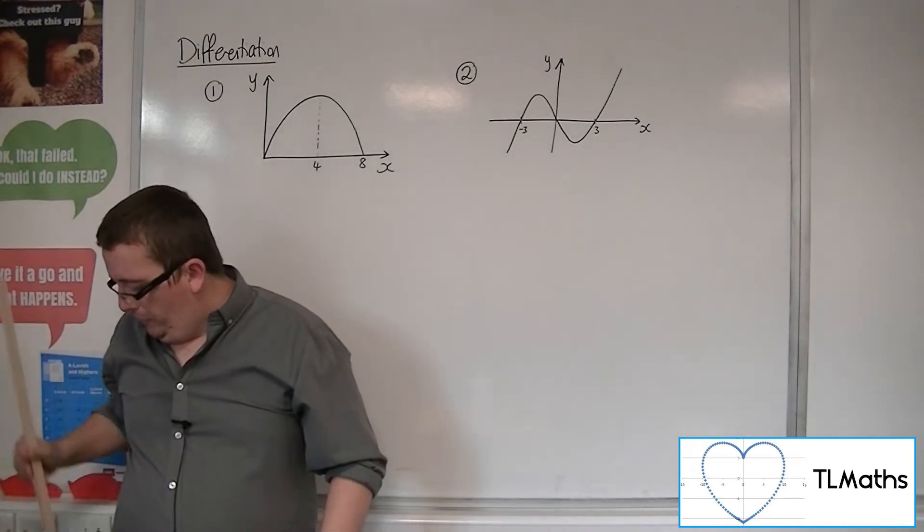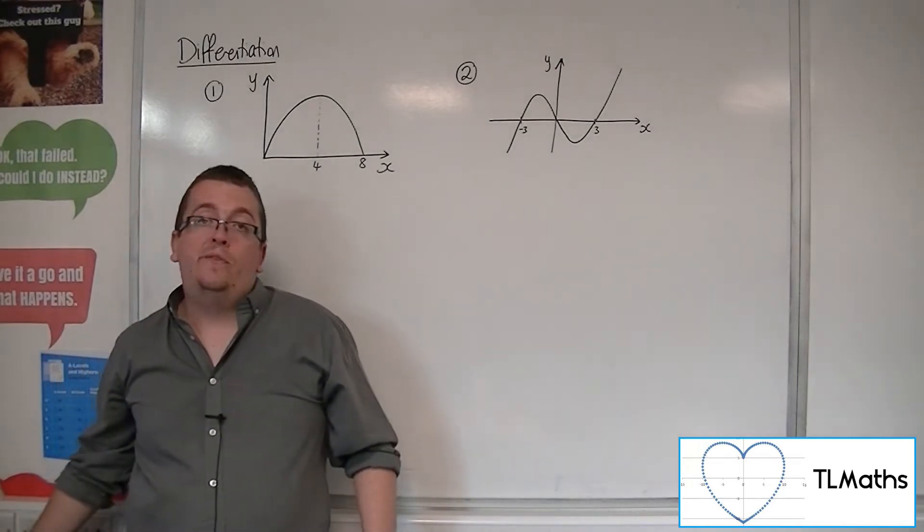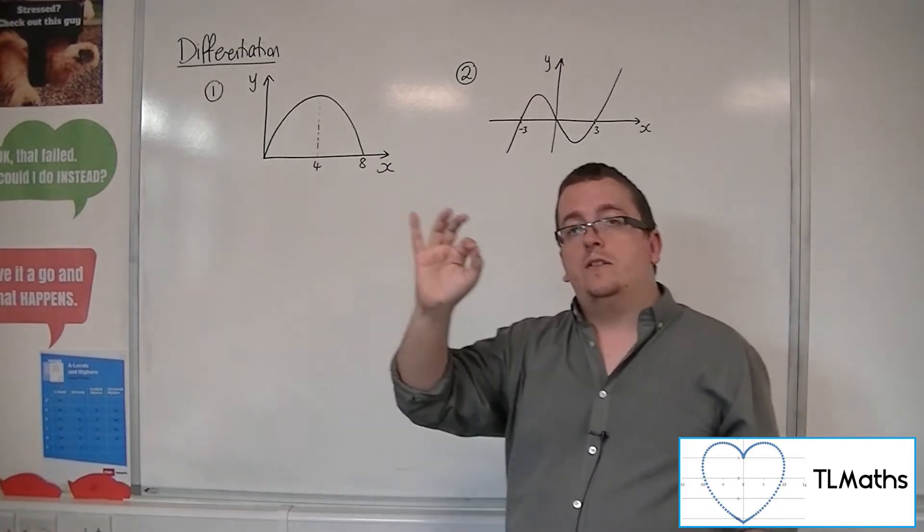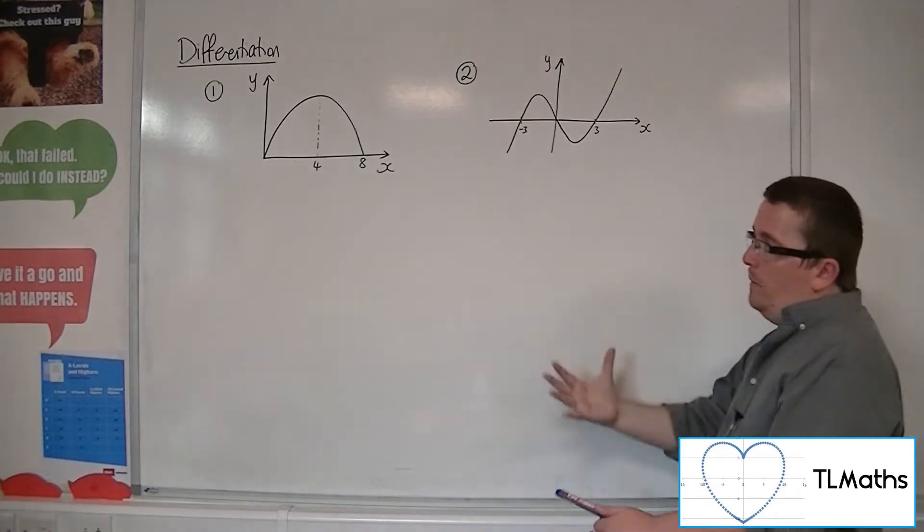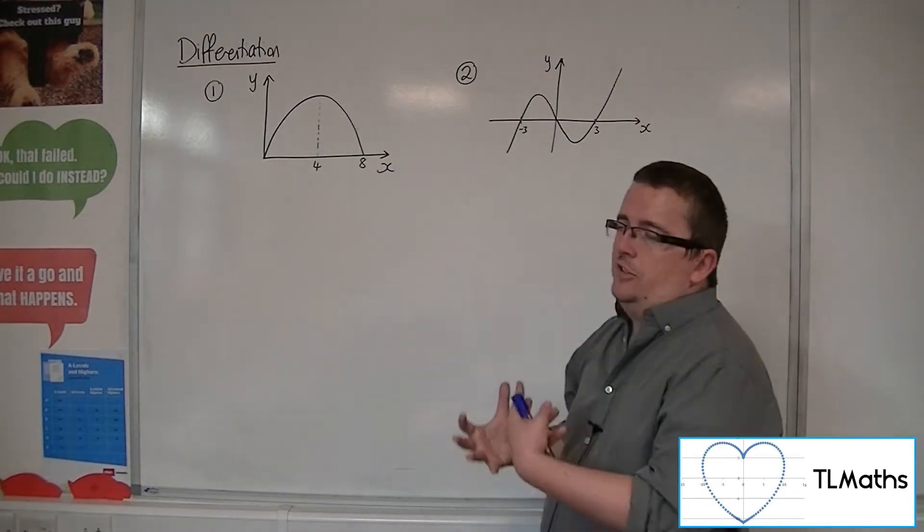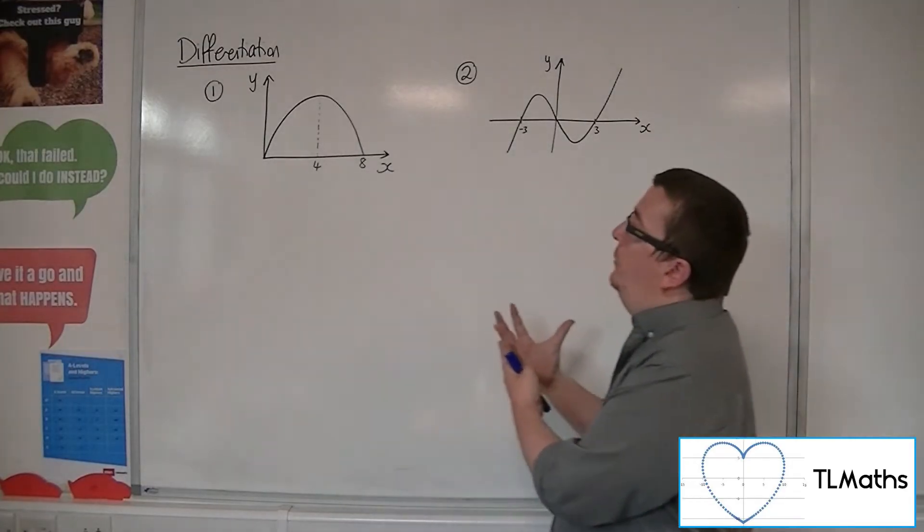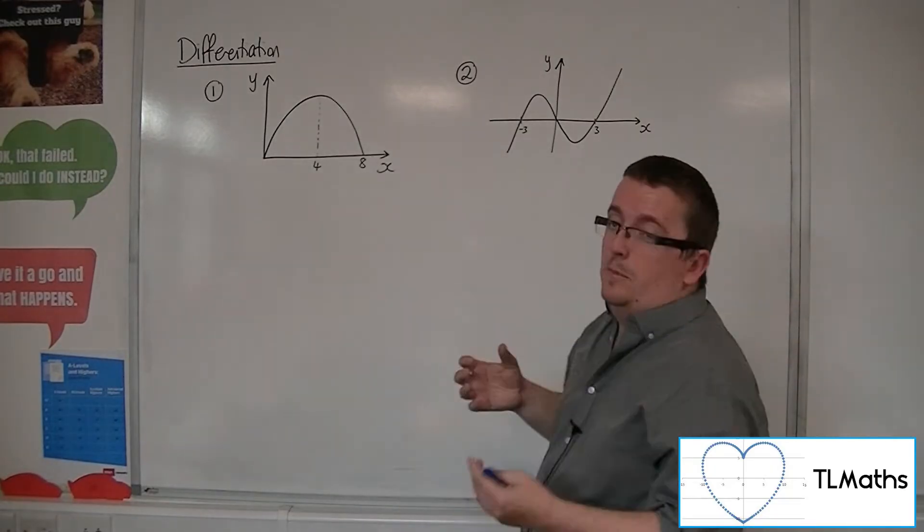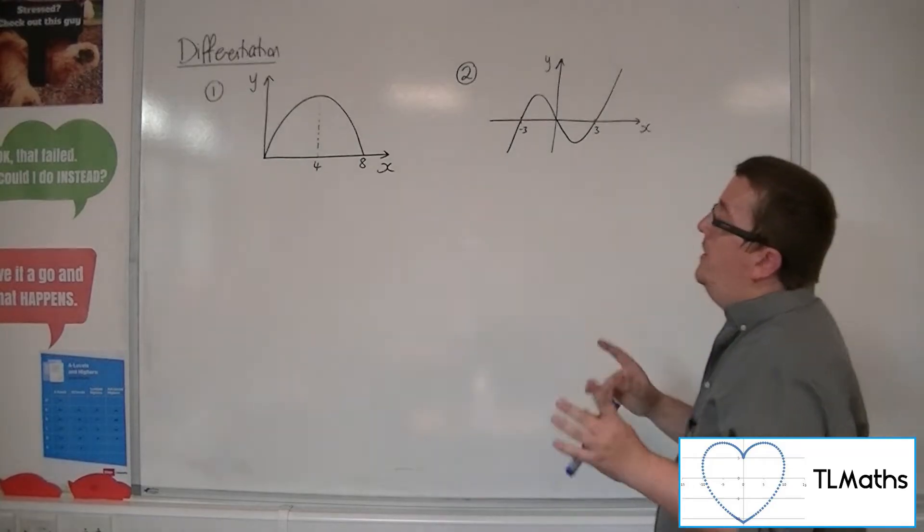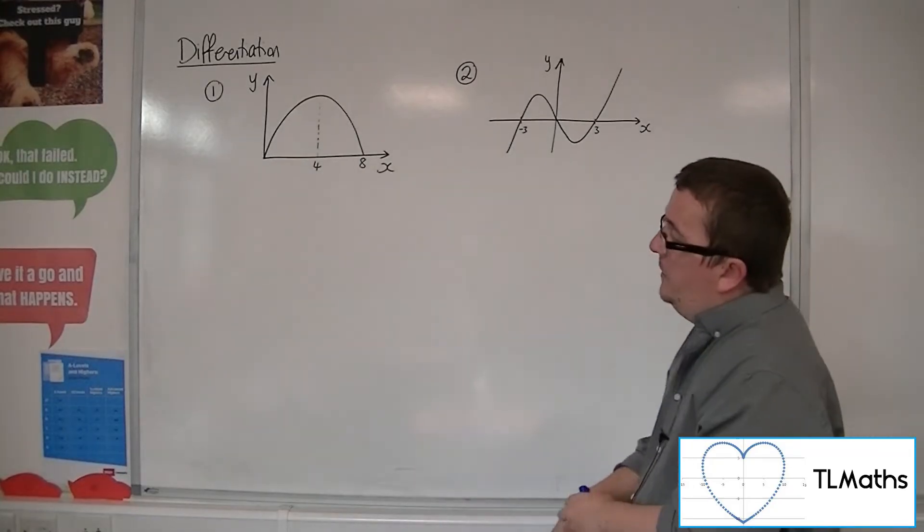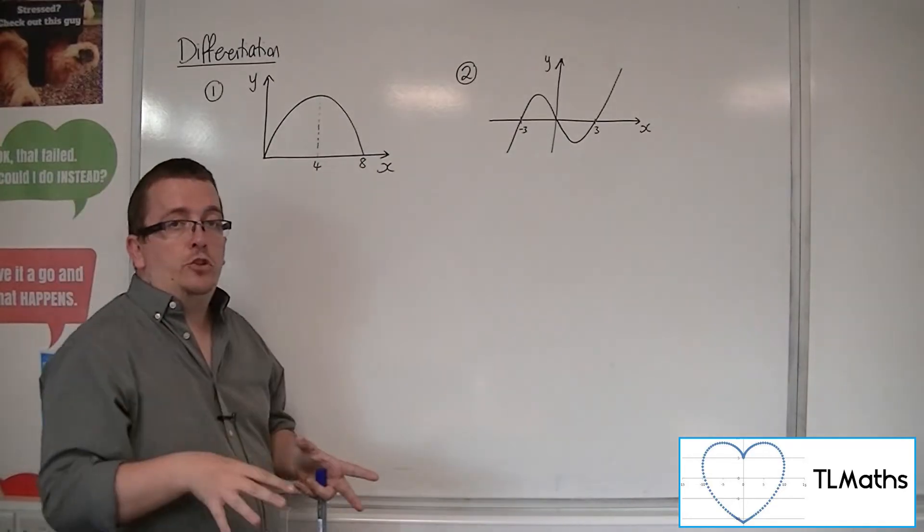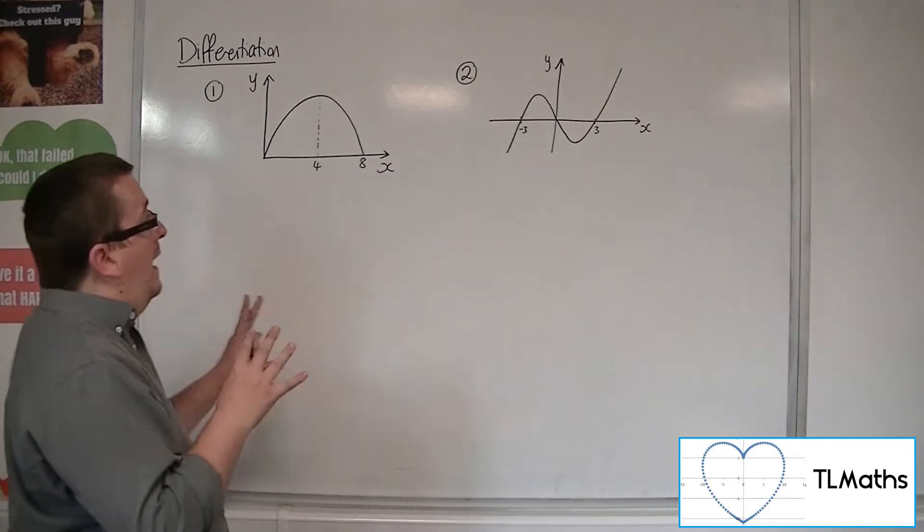So once you've got your function, you can substitute in your value of x that you want, and that will tell you precisely the gradient of the curve at that point. Now what we want to do in this video is look at two examples. I don't know what the equation is, I could give it a guess, but that's not important. The point is that we have two functions, and what I want to do is I want to sketch the gradient function from that.